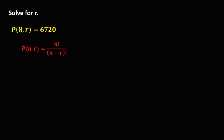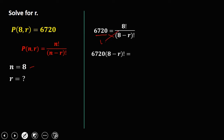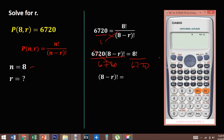For the next given, N equals 8 and R is the unknown. 6,720 equals 8 factorial over (8 minus R) factorial. Cross multiplication: 6,720 times (8 minus R) factorial equals 8 factorial. Divide both sides by 6,720. So (8 minus R) factorial equals 8 factorial divided by 6,720, which is 6.